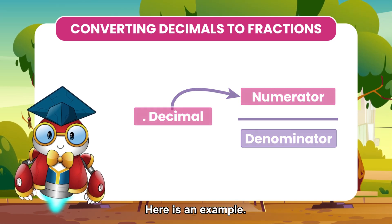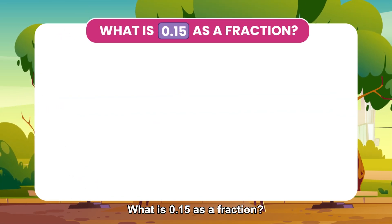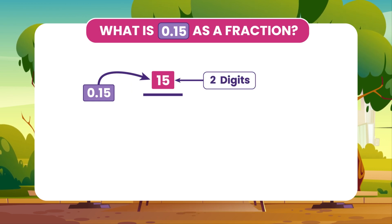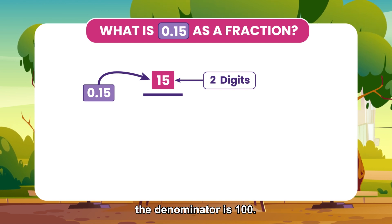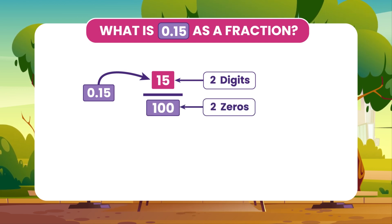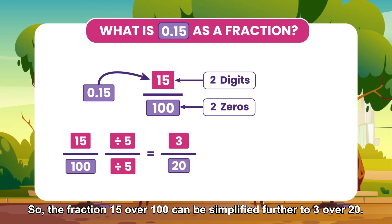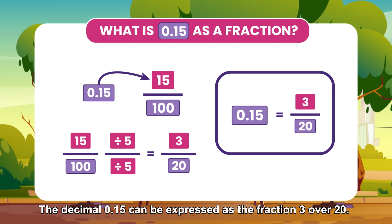Here is an example. What is 0.15 as a fraction? 15 becomes the numerator. Since there are two digits after the decimal, the denominator is 100. So, the fraction 15 over 100 can be simplified further to 3 over 20. The decimal 0.15 can be expressed as the fraction 3 over 20.